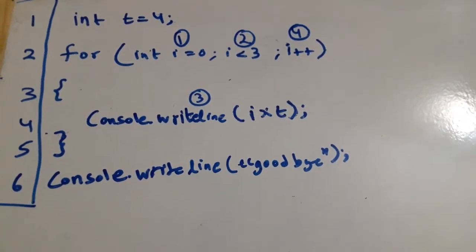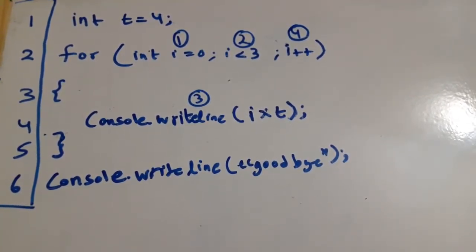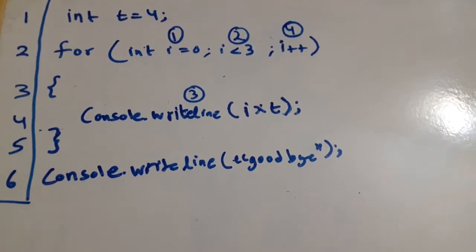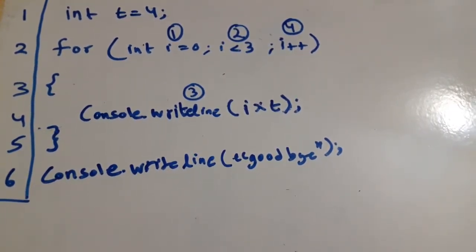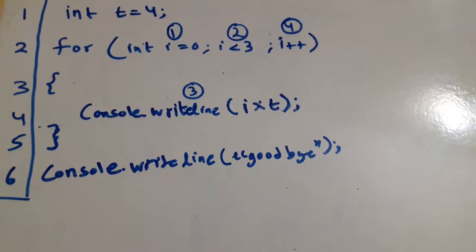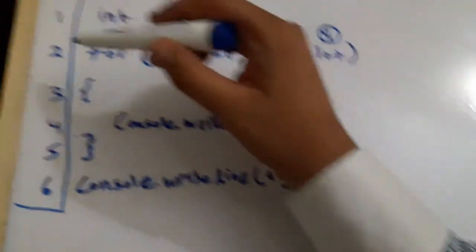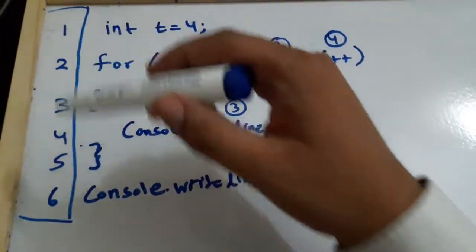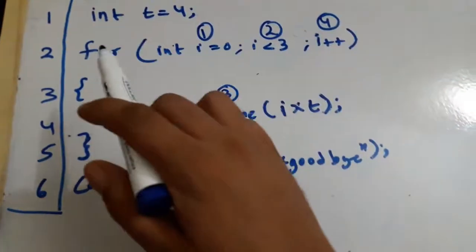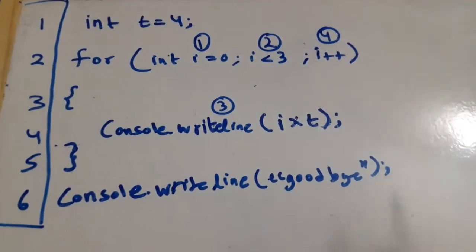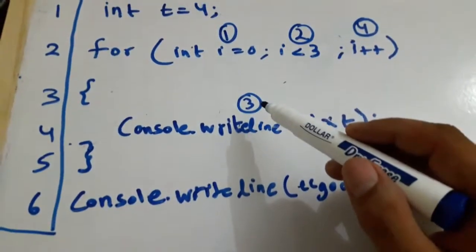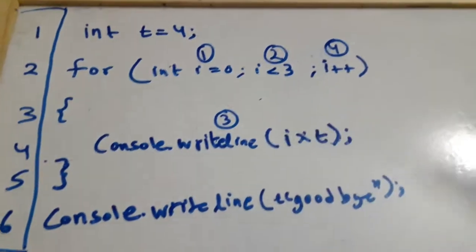In this demo video I will be explaining the syntax for the for loop and how it works. I will try to show how the program runs in memory so that you have a better understanding of what this code is all about. On the left side, these are the line numbers. Our program consists of six lines, and here is the syntax for the for loop. I have marked some points in circles which I will explain.